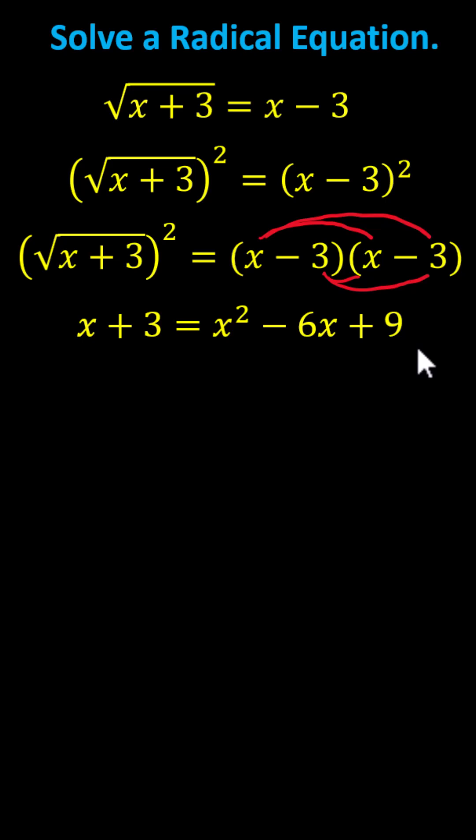Because we have a quadratic equation, we now set the left side equal to 0 by subtracting x on both sides, as well as subtracting 3 on both sides. This gives us 0 equals x squared minus 7x plus 6.